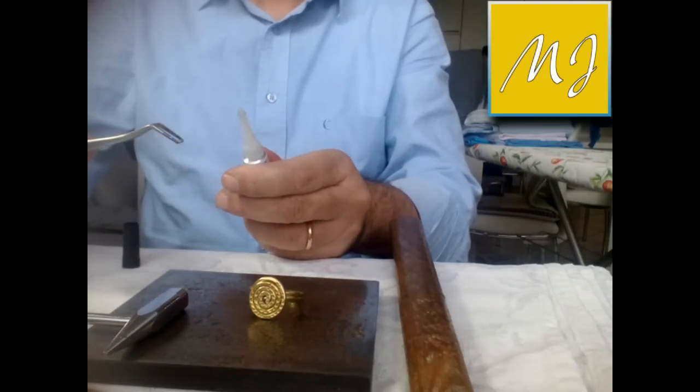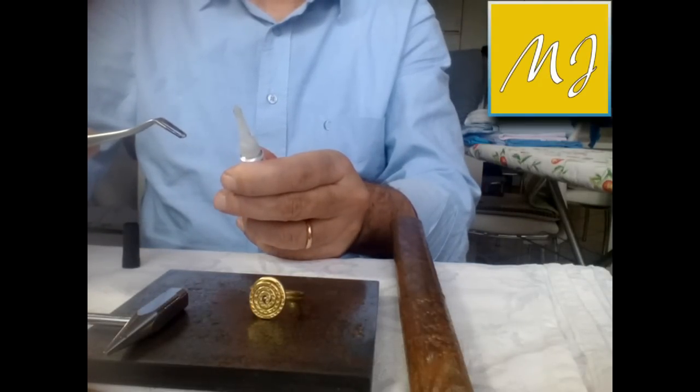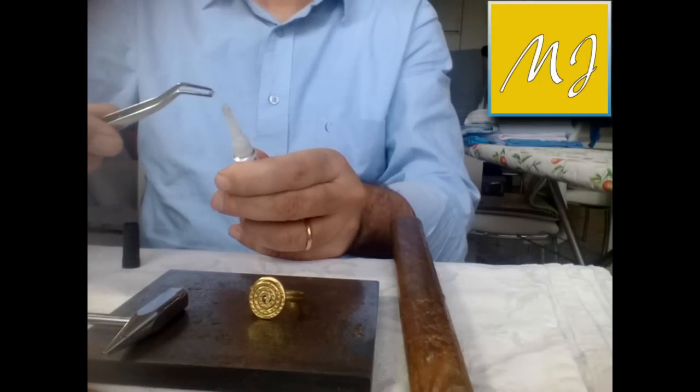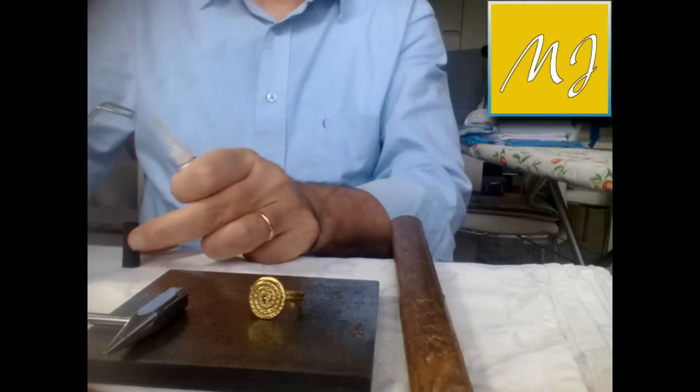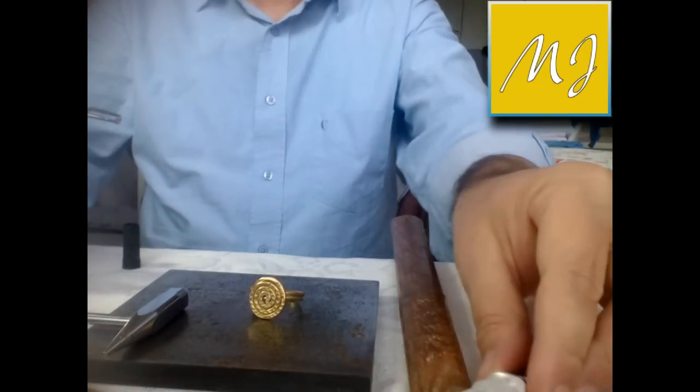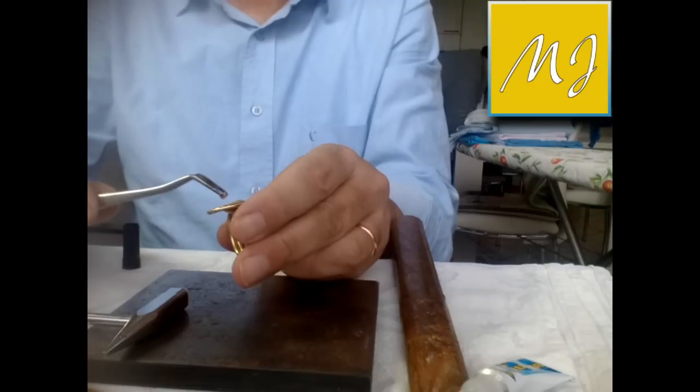Bagnando appena il fondo del cristallo, prendiamolo con le nostre pinzette, tocchiamo appena la punta dello stick della colla - ne basta pochissimo. Dopo di che lo piazziamo al centro della spirale del nostro anello con molta attenzione.